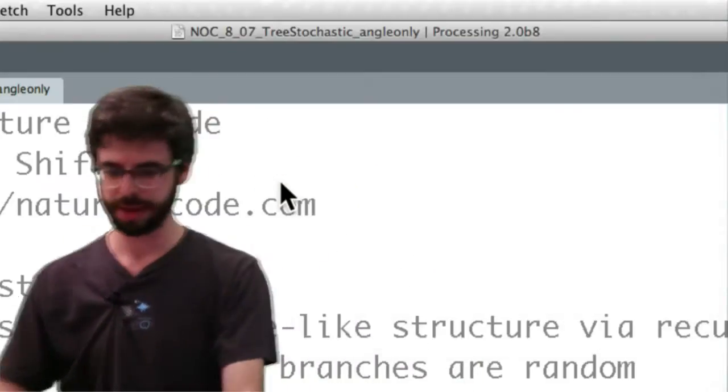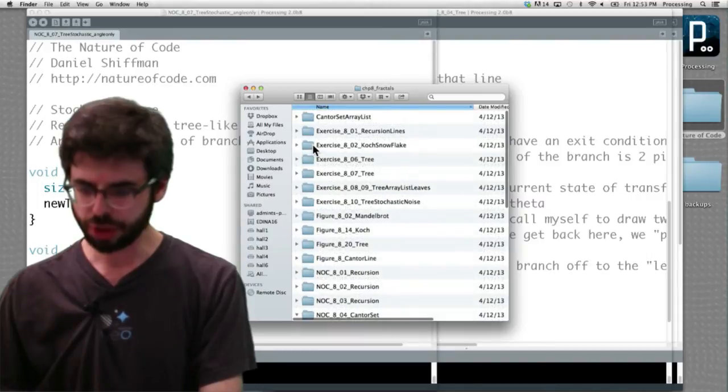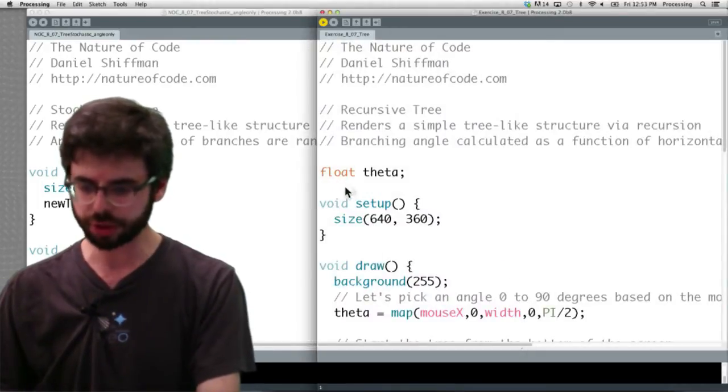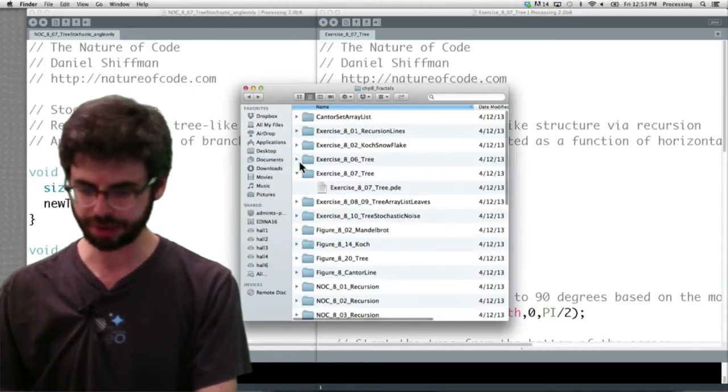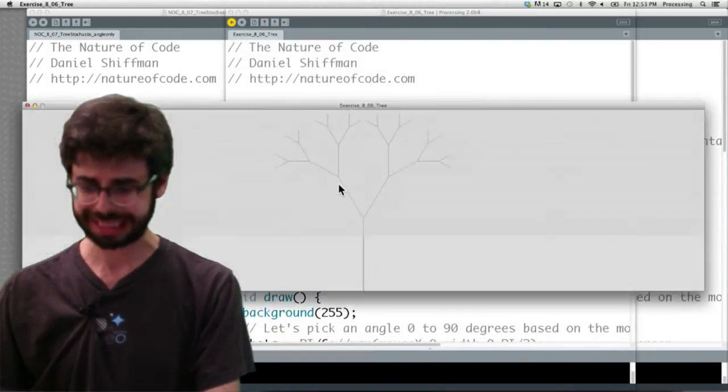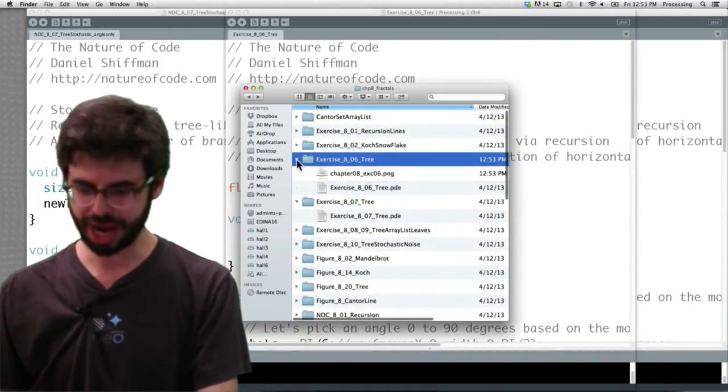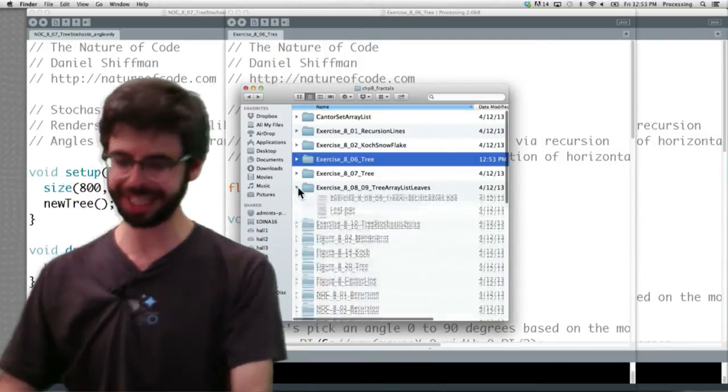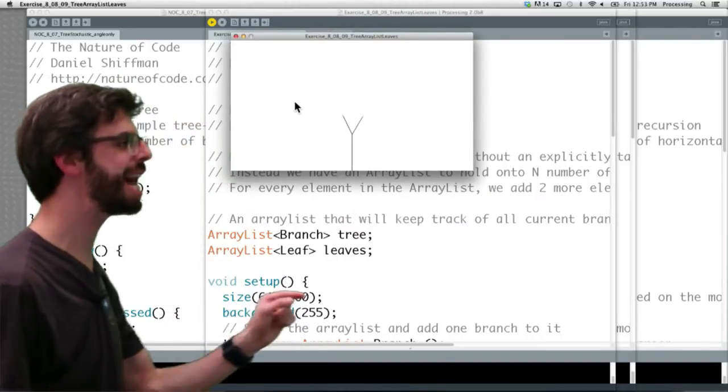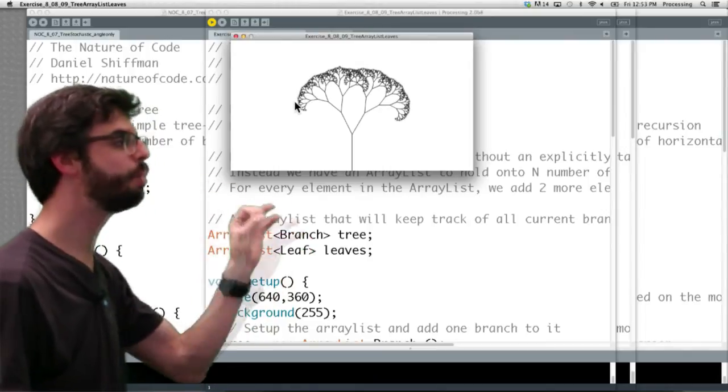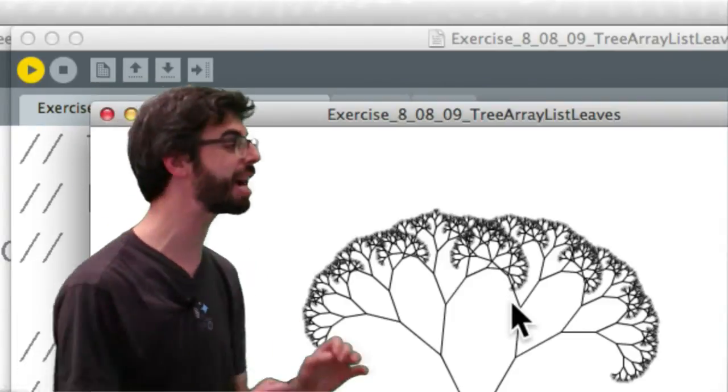And you could also, by the way, which I believe is in the repository, you could also apply the array list. This is with different thicknesses. You could also apply, I'm sorry everybody, exercise 8.6. Where is it? I'm doing a terrible job. Okay, so I have failed you. Tree array list leaves. There we go. Exercise 8.8 and 9.